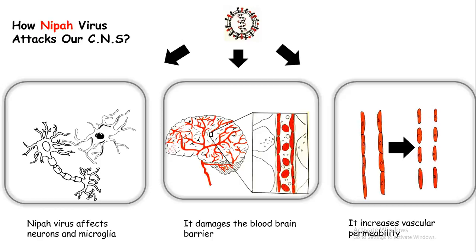Nipah virus can infect nerve cells — the neurons — and also the microglia, which are immune cells in the brain. Once they are affected, they become more primed and secrete alarming signals that draw the attention of other microglia and immune cells in the brain, creating a huge inflammatory response that causes the burning sensation. Also, the vascular permeability of the capillaries surrounding the brain is increased in Nipah virus infection. In simple words, the blood capillaries loosen up, leading to fluid exchange, swelling, and other inflammatory responses. This is how Nipah virus attacks our respiratory system and central nervous system.